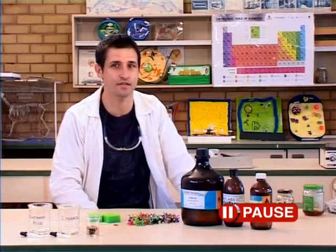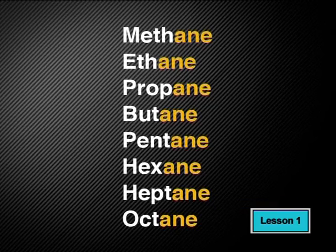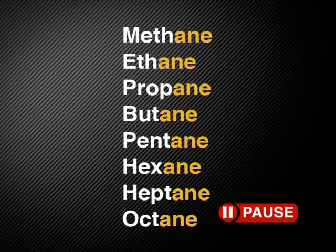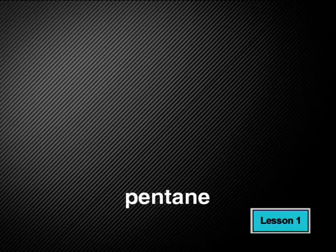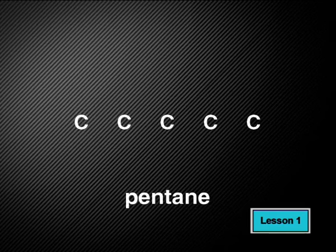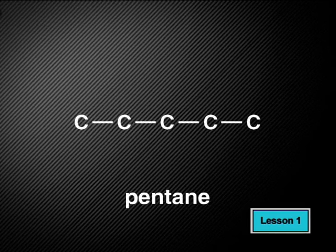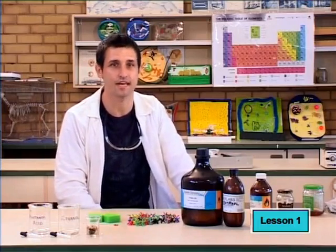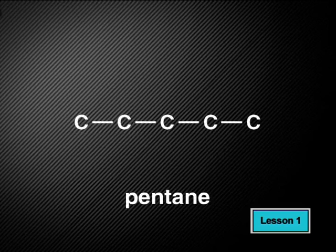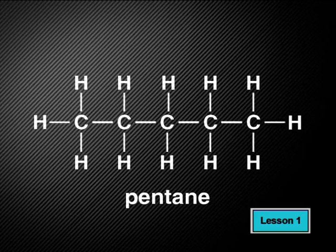Remember how the names of the alkanes ended — they all ended in the letters A, N, E. Do you think you could draw a molecule of pentane on your own? We start off by taking the first part of the name: pent means that our carbon chain is made up of five carbon atoms. We then join them up with single bonds between the carbon atoms because the name ends in -ane. Don't forget we are drawing a hydrocarbon, so fill in the remaining bonds around carbon with hydrogen atoms until each carbon has four bonds. There we have it — the structural formula for pentane.